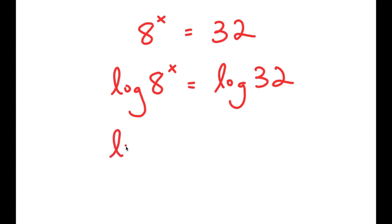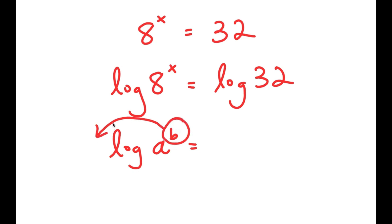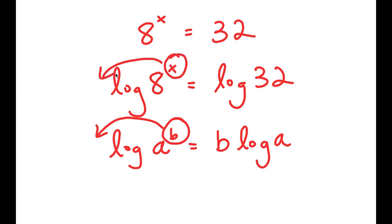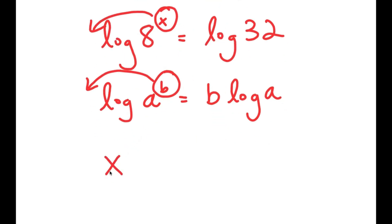Now, if I have something in the form log of a to the power of b, I can move b to the front of the logarithm. So this turns into b times log a. So log a to the power of b is equal to b times log a. In the case of log 8 to the power of x, we can think of x as b, so we can move x to the front. So I get x times log of 8 is equal to log of 32.